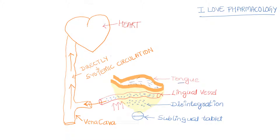This diagram clearly explains how the sublingual route of administration reaches the systemic circulation. Here is the tongue, the lingual vessel, and the sublingual tablet. Once the tablet is placed below the tongue, it undergoes disintegration to release smaller particles. These particles enter the lingual vessels and go directly into the systemic circulation through the vena cava, reaching the heart, from where the drug is circulated to the rest of the body — without passing through the liver.